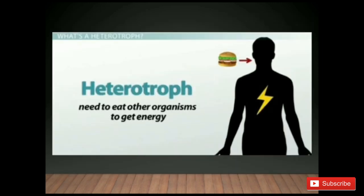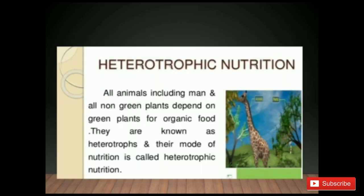Now the next is heterotrophs. A heterotroph needs to eat other organisms to get energy. All animals including humans, and all non-green plants, depend on green plants for organic food. They are known as heterotrophs and their mode of nutrition is called heterotrophic nutrition.